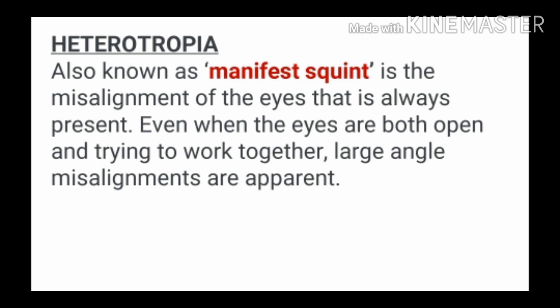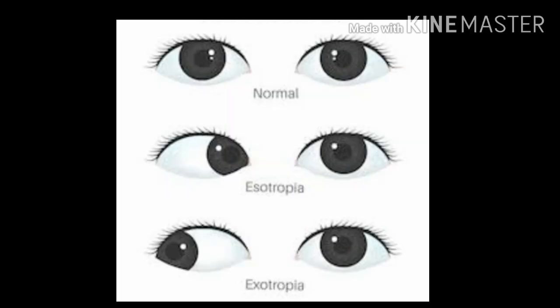Heterotropia, also known as manifest squint, is the misalignment of the eyes that is always present. Manifest means it is visible — so in heterotropia, just by seeing the patient we can say that the patient has squint. Even when both eyes are open and trying to work together, large-angle misalignments appear. As you can see in the image, if the patient has heterotropia, the eyes will appear deviated either nasally or temporally.